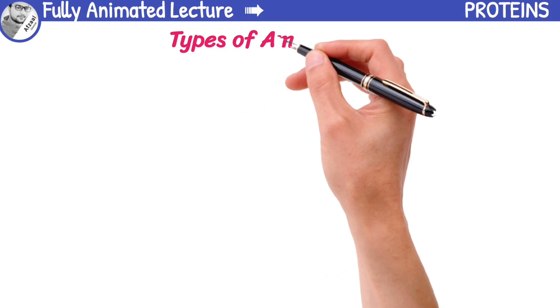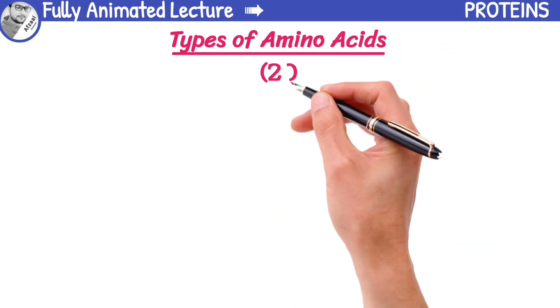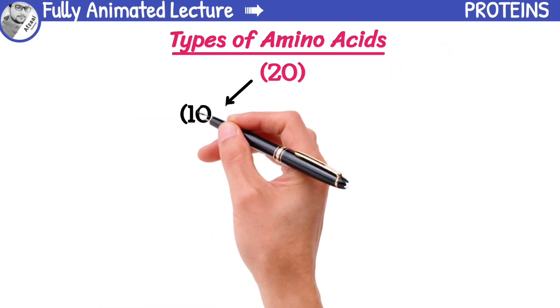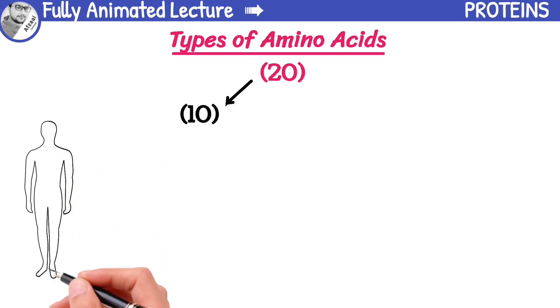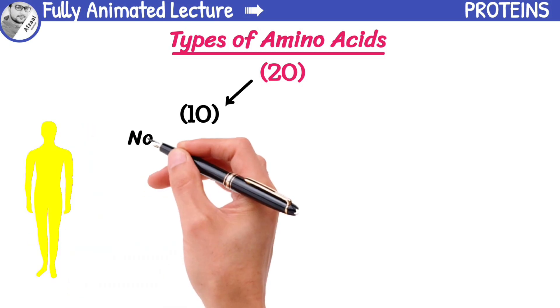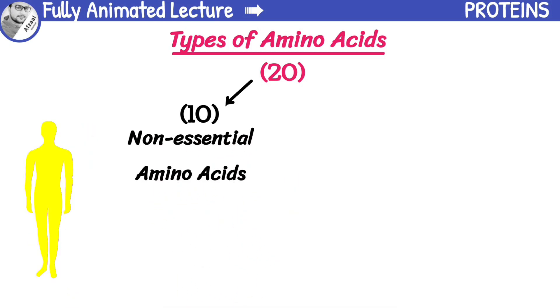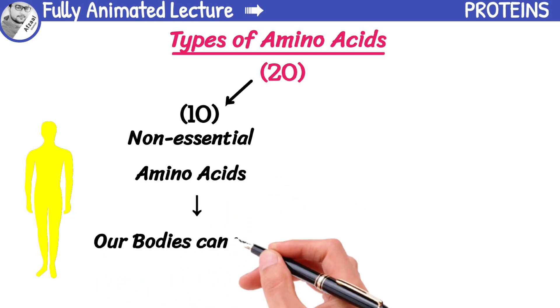There are 20 different types of amino acids, but our bodies can only produce 10 out of the 20 amino acids. These 10 amino acids are called non-essential amino acids because our bodies can make them on their own.